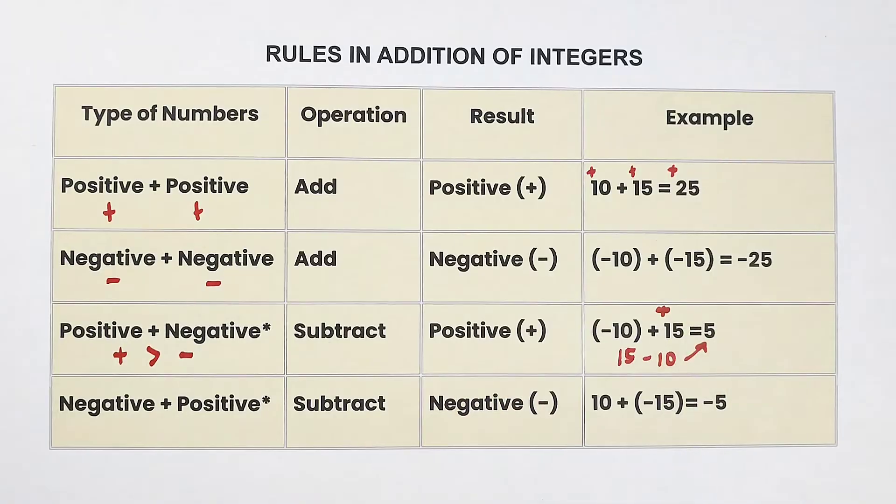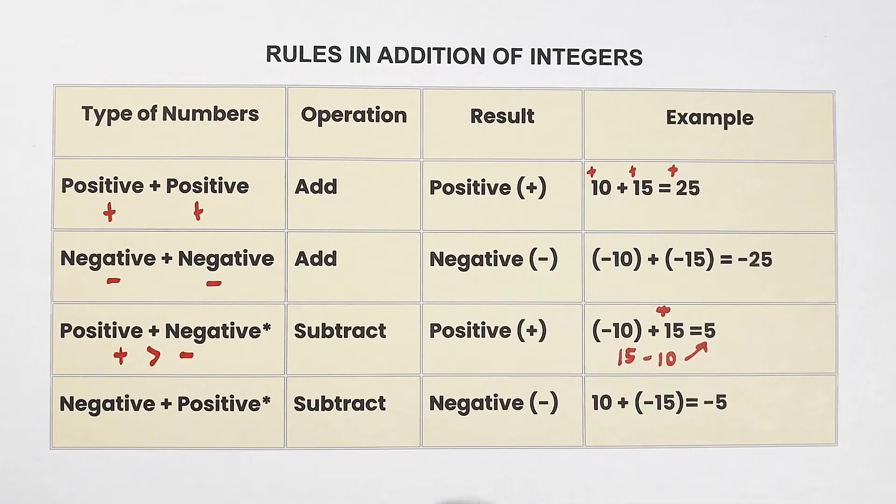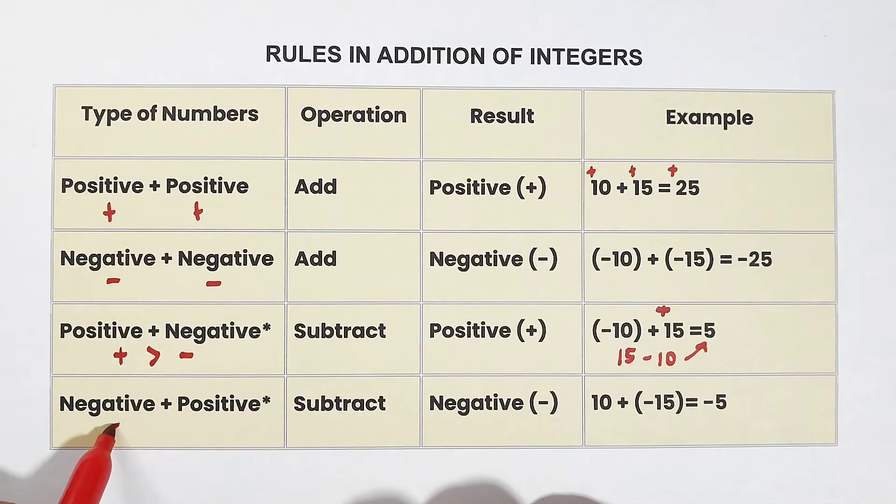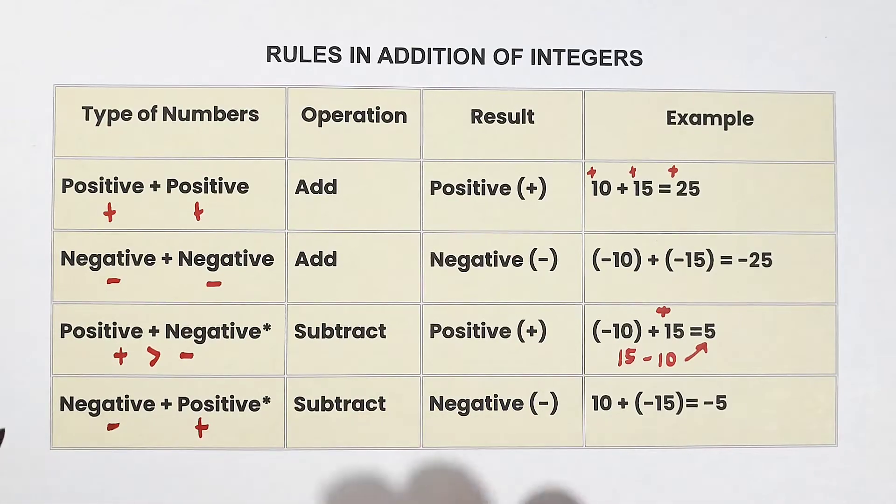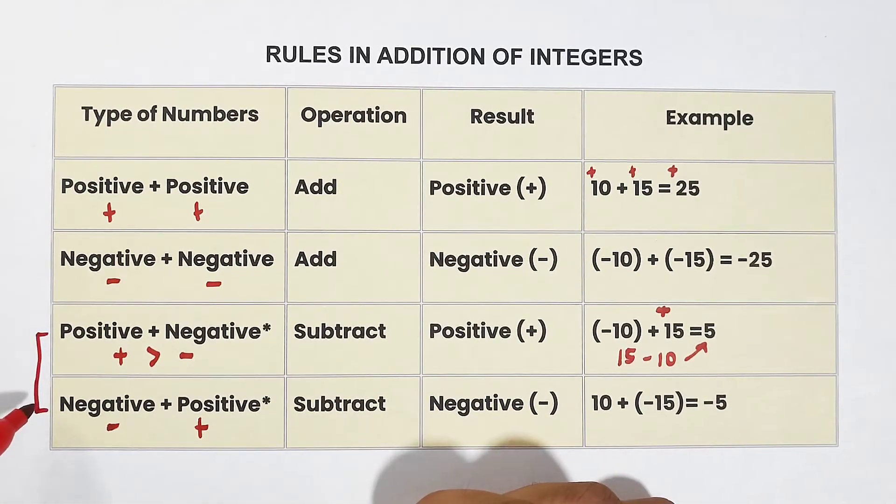Now let's go with this one. Negative plus positive, and then it says subtract because different signs. This one and this one always have subtraction.